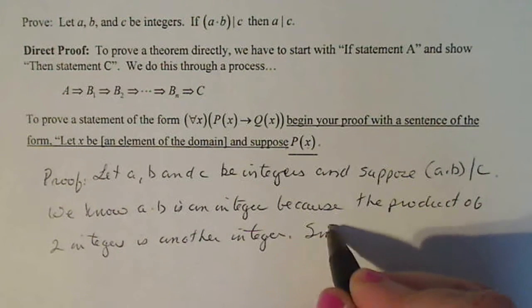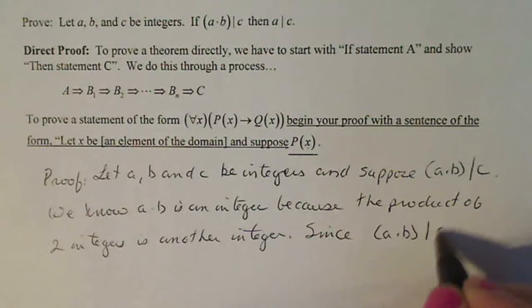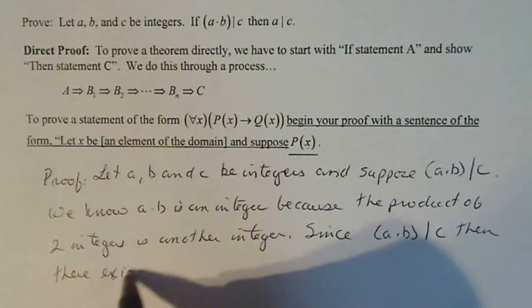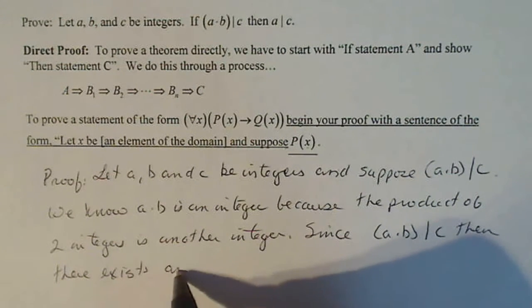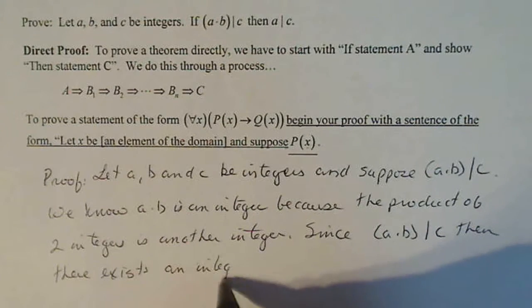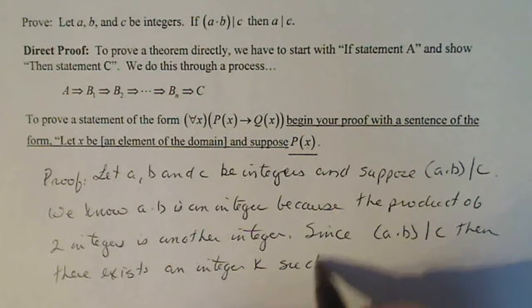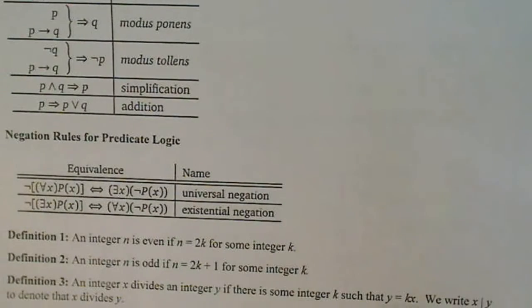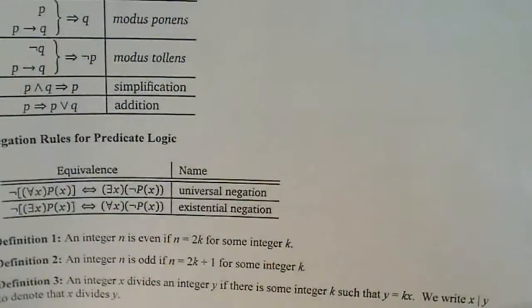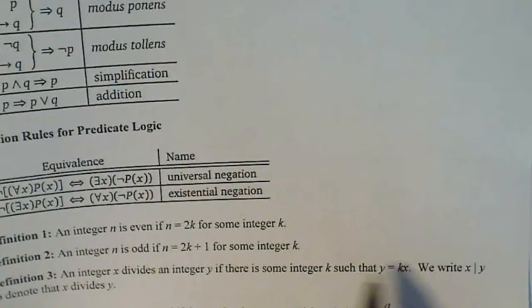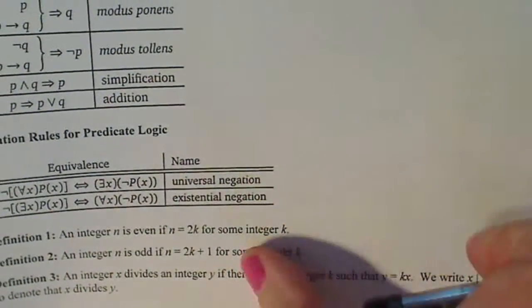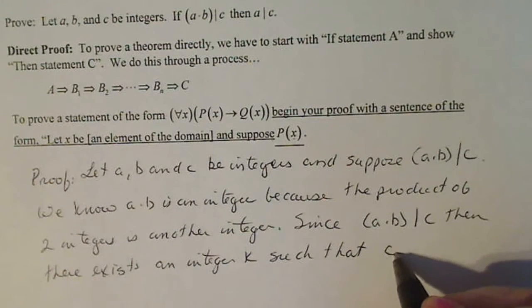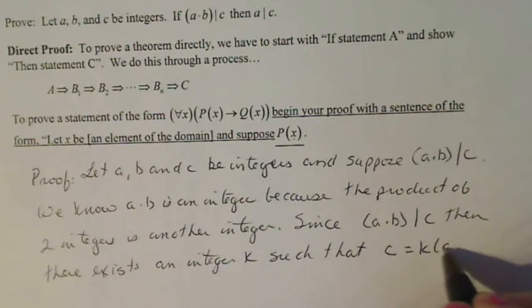Since we know this relationship a times b divides c, then there exists an integer k such that c equals k times a times b. Now let's do that. Let me go back to the definition and make sure I get this right. Notice that if x divides y, the k goes with the number that's in front. So that means such that c equals k times a times b.